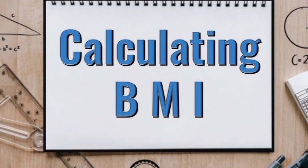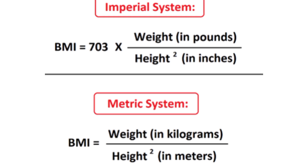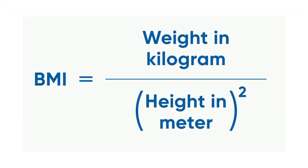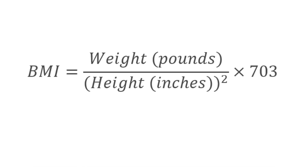How to calculate BMI: there are two methods — metric calculation and imperial calculation. In the metric method, BMI equals weight in kilograms divided by height in meters squared. In the imperial method, BMI equals 703 multiplied by weight in pounds, divided by height in inches squared.